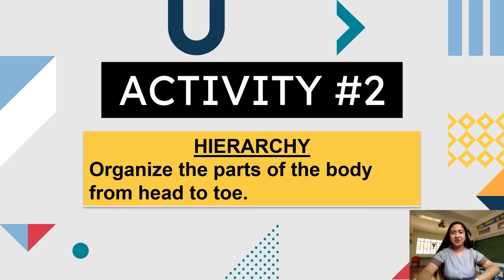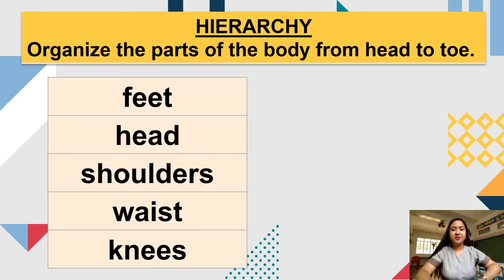Let us proceed to our next activity, which is hierarchy. This time, you have to organize the parts of the body from head to toe. Here are the different parts of the body: feet, head, shoulders, waist, and knees. I will give you time to answer this activity.